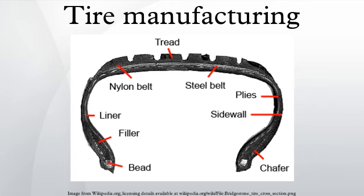Tire factories start with bulk raw materials such as rubber, carbon black, and chemicals and produce numerous specialized components that are assembled and cured. This article describes the components assembled to make a tire, the various materials used, the manufacturing processes and machinery, and the overall business model.